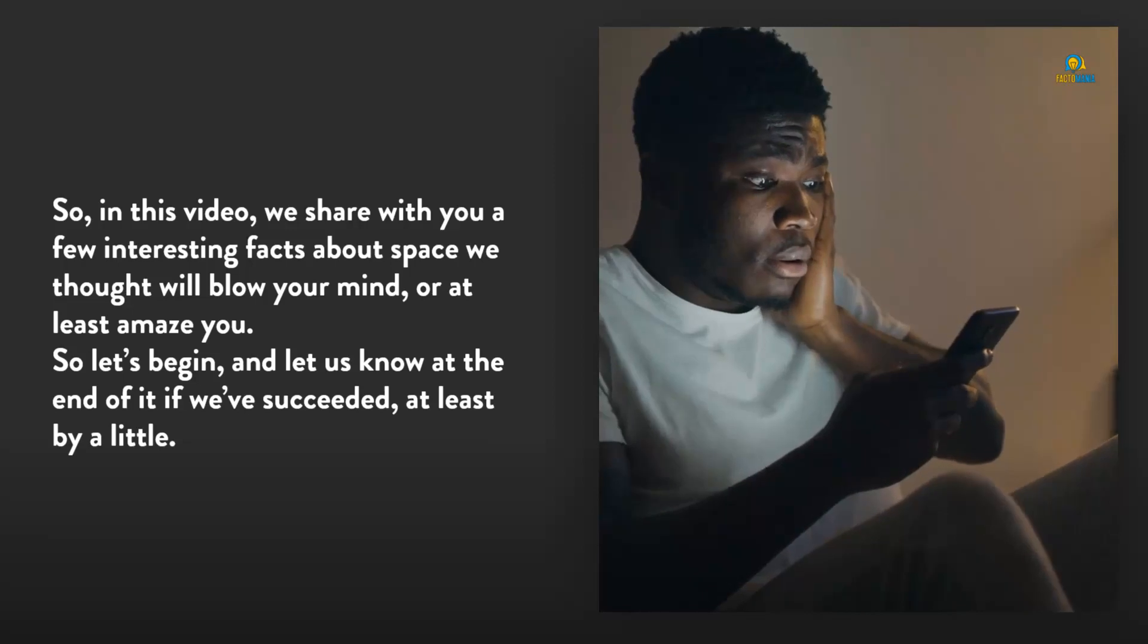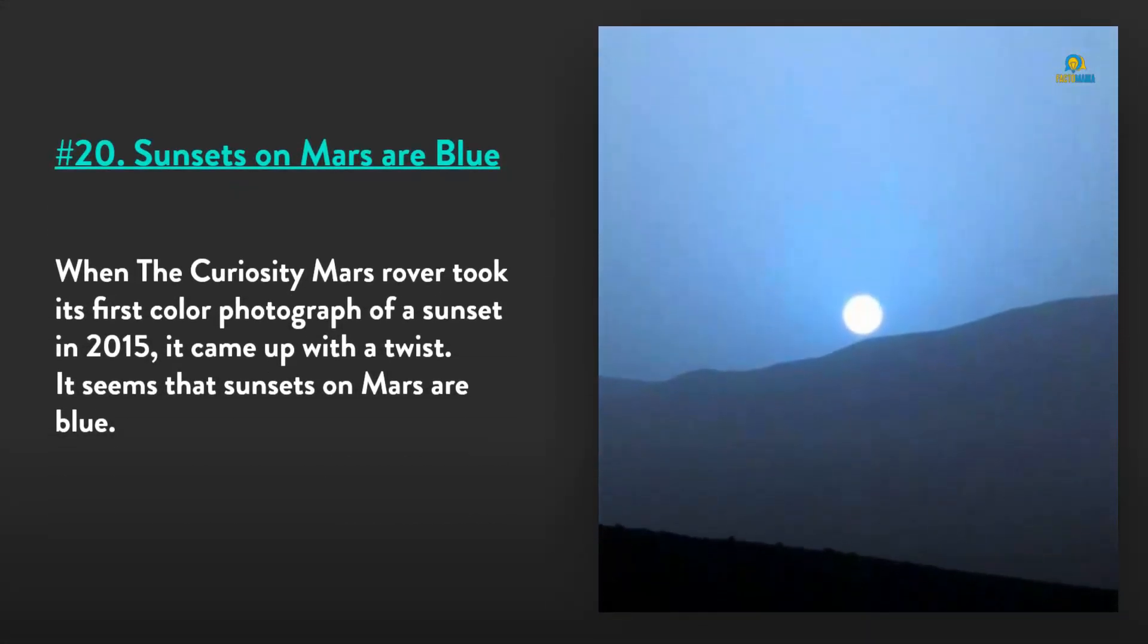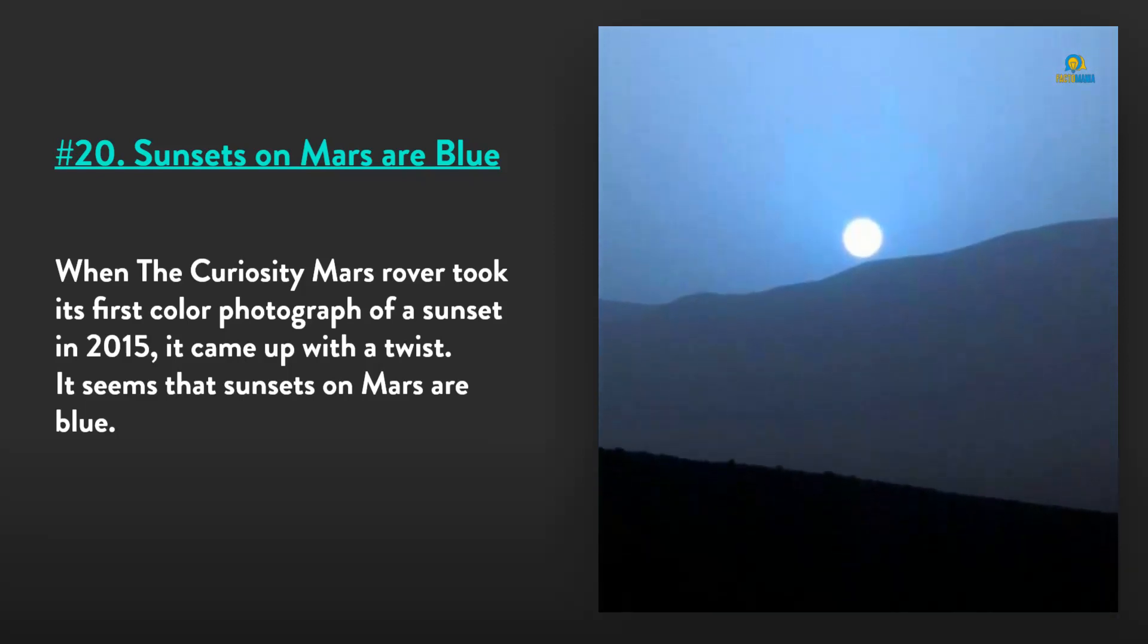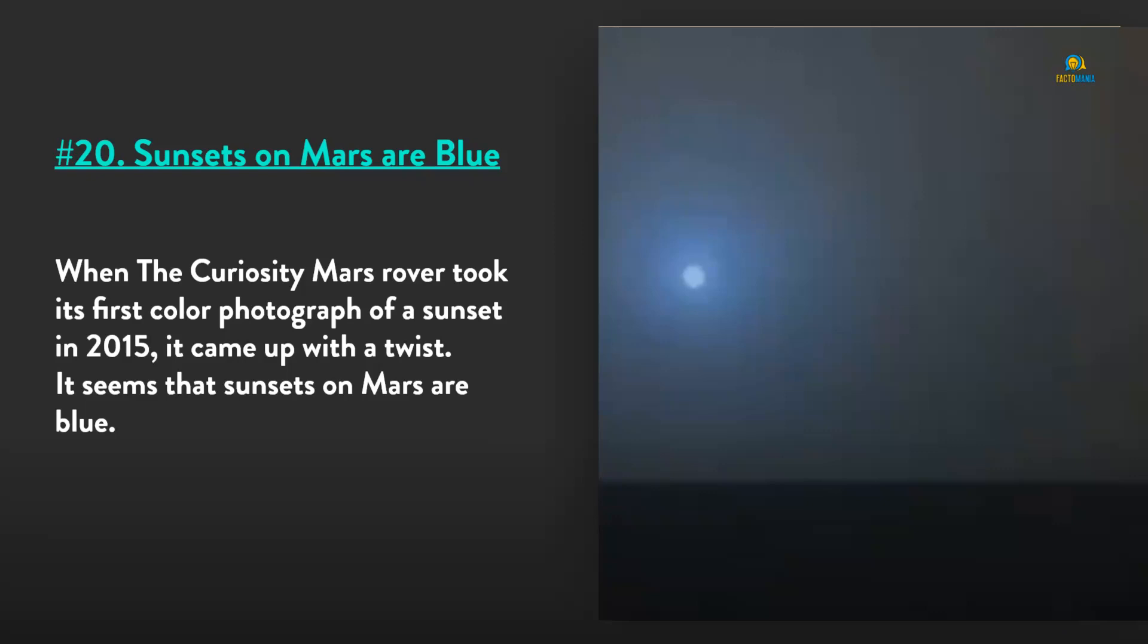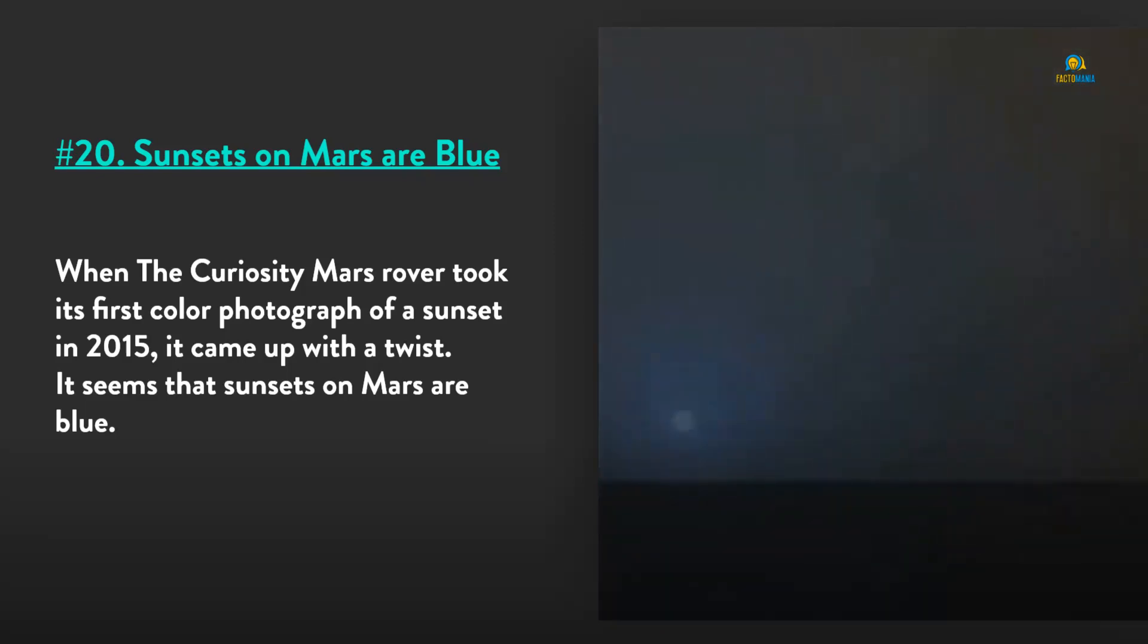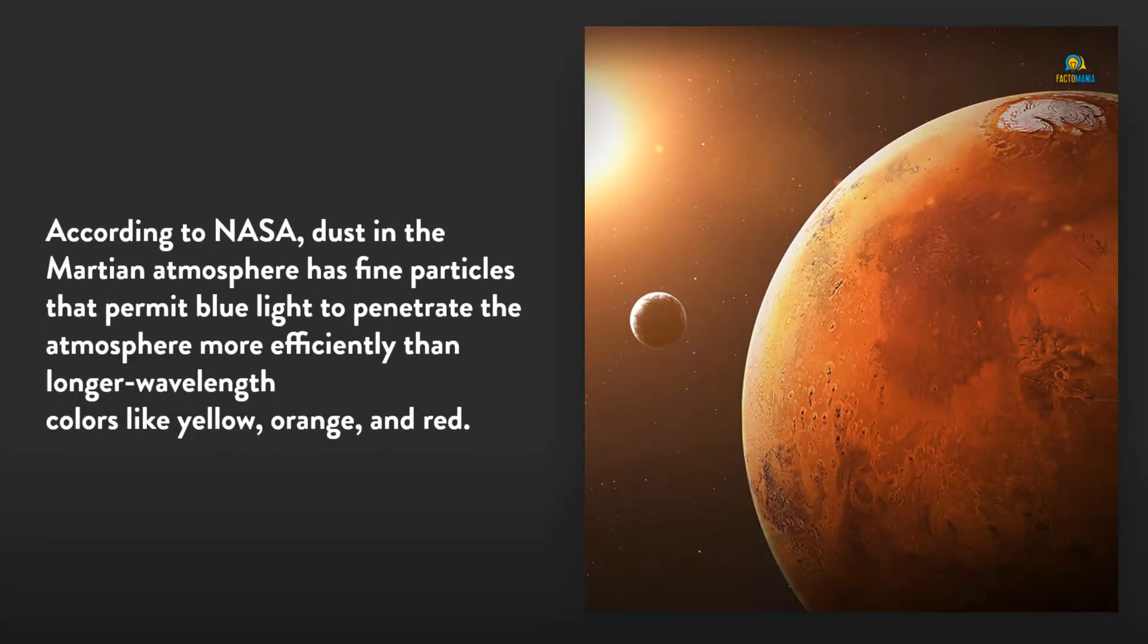Number 20: Sunsets on Mars are blue. When the Curiosity Mars rover took its first color photograph of a sunset in 2015, it came up with a twist. It seems that sunsets on Mars are blue. According to NASA, dust in the Martian atmosphere has fine particles that permit blue light to penetrate the atmosphere more efficiently than longer wavelength colors like yellow, orange, and red.